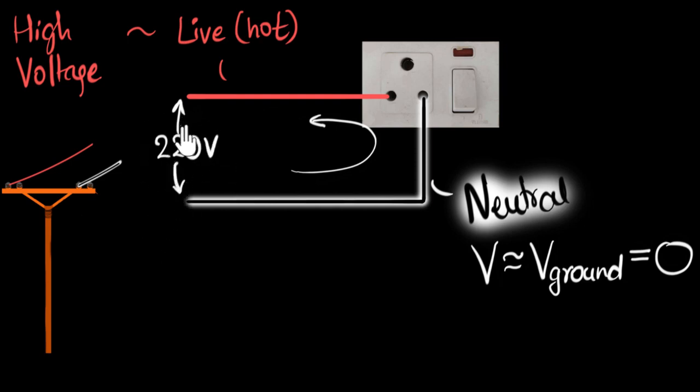If you're wondering why this particular number, it's got something to do with history and Edison and light bulbs and cost. Don't worry about why it is 220. It just happens to be 220 for India. But what does that even mean?